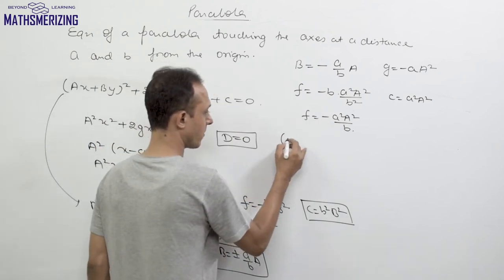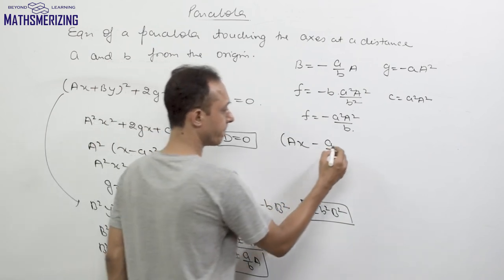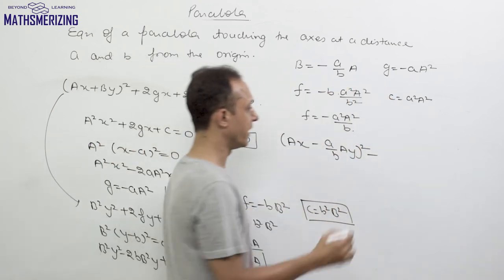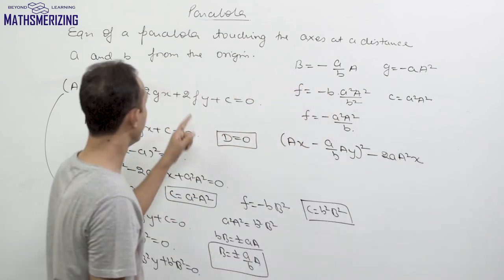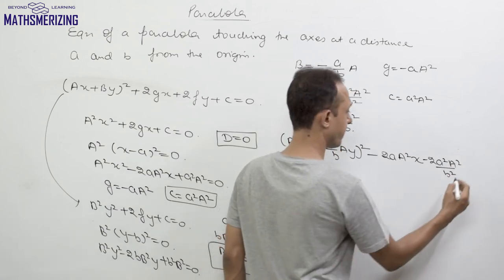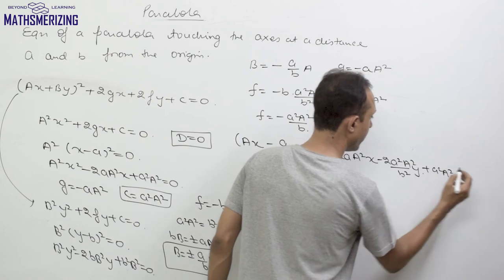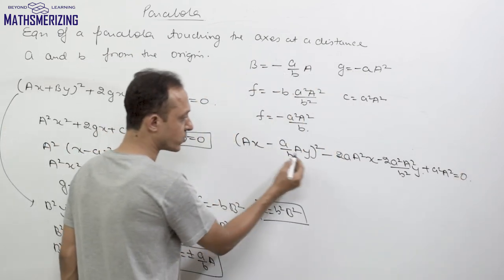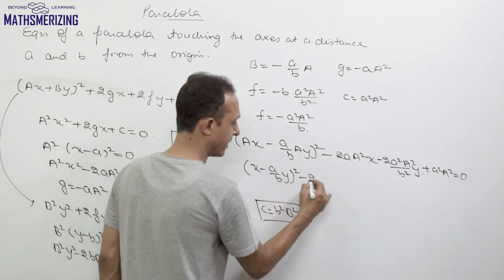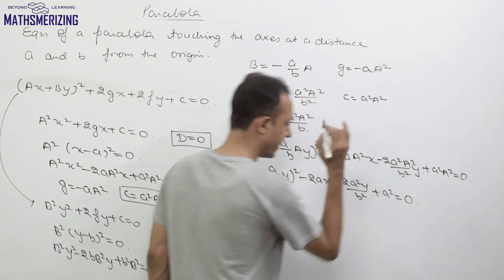We substitute these values into the general equation, writing b as −a/b·a: (ax − (a/b)·a·y)² − 2a·a²·x − 2(a²·a²/b)·y + a²·a² = 0. Taking a² common and cancelling, we get (x − (a/b)y)² − 2ax − (2a²y/b) + a² = 0.